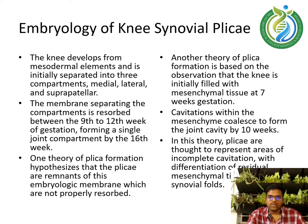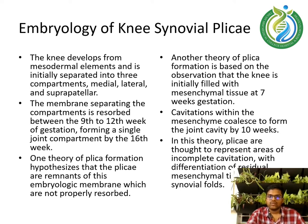Another theory of plica formation is based on the observation that the knee is initially filled with mesenchymal tissue at 7 weeks of gestation. Cavitations within the mesenchymal tissue coalesce to form the joint cavity by 10 weeks. In this theory, plicae are thought to represent areas of incomplete cavitation with differentiation of residual mesenchymal tissue into synovial folds.